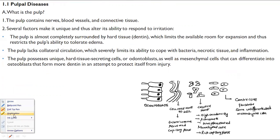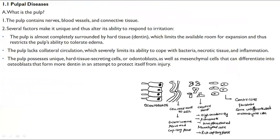Now, first we'll be talking about pulp. Pulp is a vital tissue, so it definitely has blood vessels, connective tissues, and nerves — which is why we feel sensations. Several factors make it unique and thus alter its ability to respond to irritation.